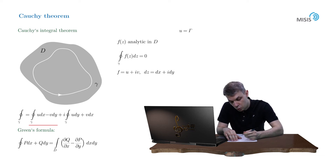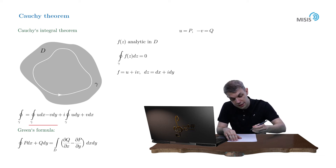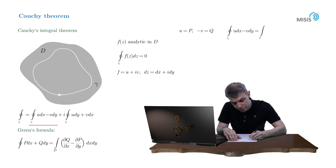In the first integral, u plays the role of p while minus v plays the role of q. So it can be transformed into the double integral of minus ∂v/∂x minus ∂u/∂y, dx·dy.